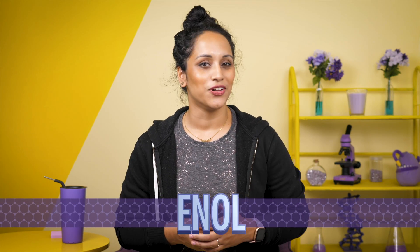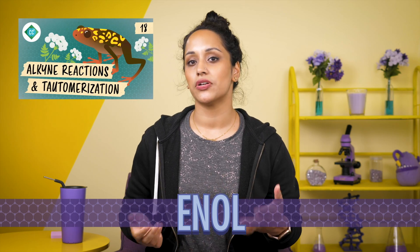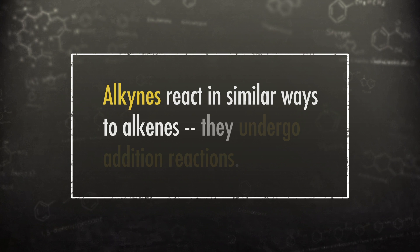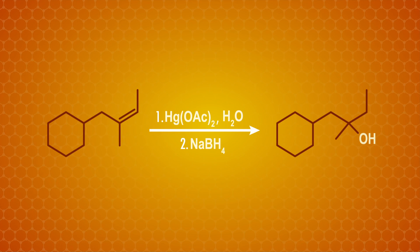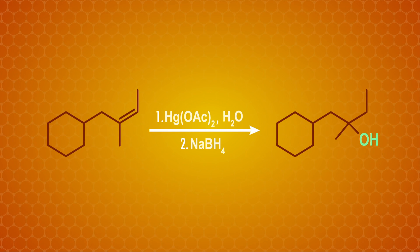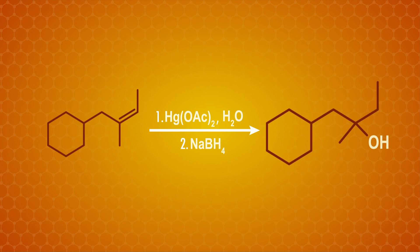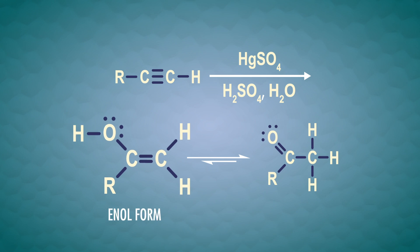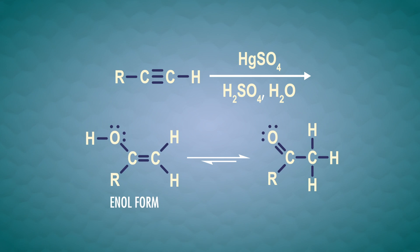The word enol sounds familiar because we first met enols in episode 18, when we learned about alkynes — molecules with a carbon-carbon triple bond. Alkynes react in similar ways to alkenes; they undergo addition reactions. There's a nice, electron-dense center where the triple bond is, so anything that's even a little bit electrophilic is going to head straight there. A particularly important set of addition reactions involve water. Adding an OH group to an alkene produces a straightforward alcohol, but alkynes do something funky — we get an enol, a molecule with an alcohol attached to a carbon-carbon double bond.